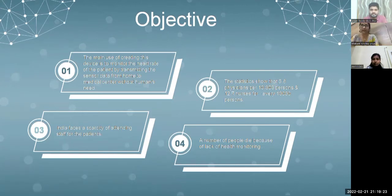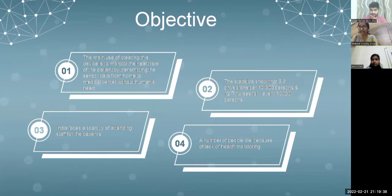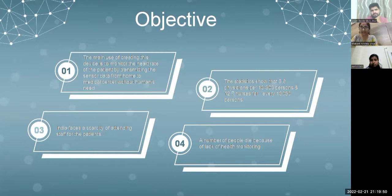The main objective of this project is to monitor the heart rate of the patient by transmitting sensor data from home to the medical center without human intervention. Statistics show there are 5.8 physicians per 10,000 persons and 12.7 nurses per 1,000 persons, meaning India is facing a scarcity of attending staff. A number of people die because of lack of health monitoring.